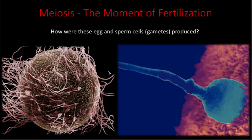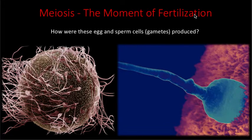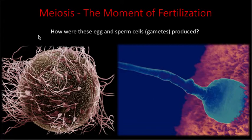Hi everyone and welcome back to another episode of Science. In this episode I want to teach you about the process of meiosis which leads to the moment of fertilisation. Meiosis is the process that your testes and ovaries use to produce sperm and eggs. The testes produce sperm and the ovaries produce eggs, and meiosis is the process in which this occurs.